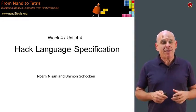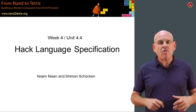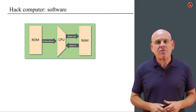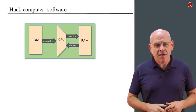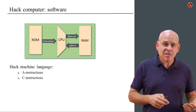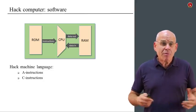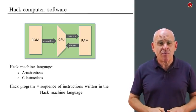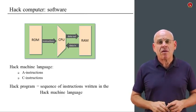In this unit, we're going to complete the description and specification of the Hack machine language. The overall context is that we have a hardware platform consisting of instruction memory, CPU, and data memory. We have a machine language consisting of A instructions and C instructions. A Hack program is a sequence of such instructions batched together, and we execute them one at a time.